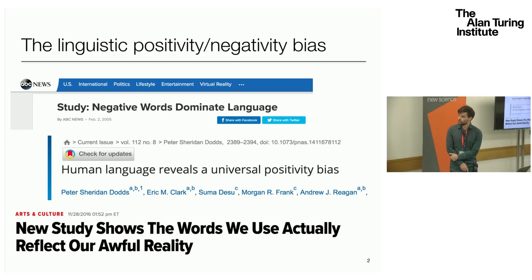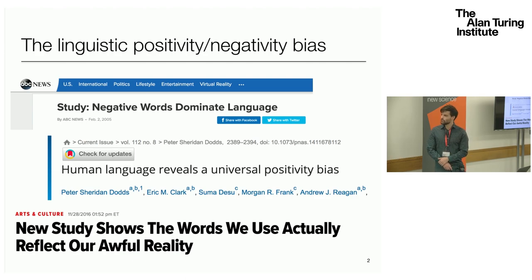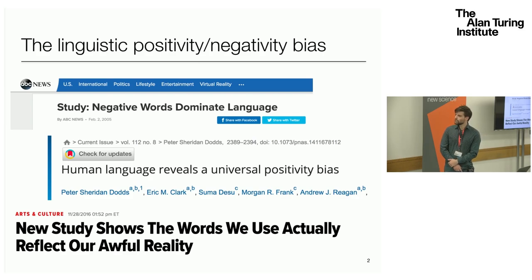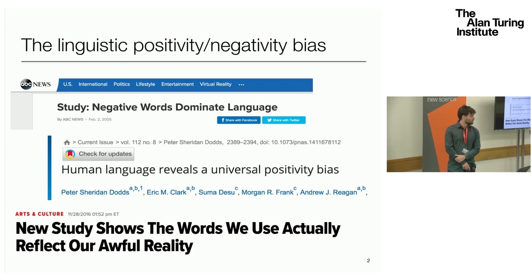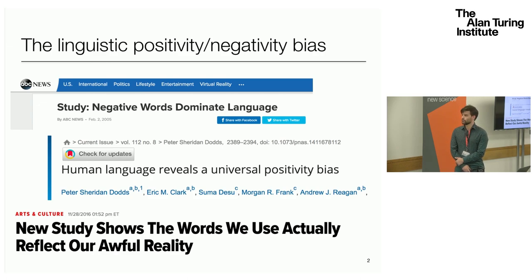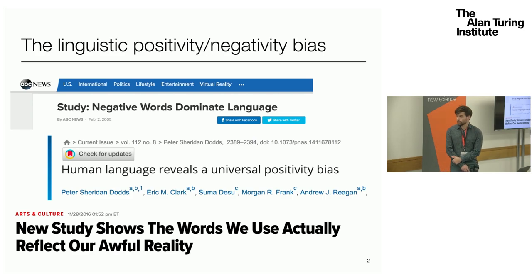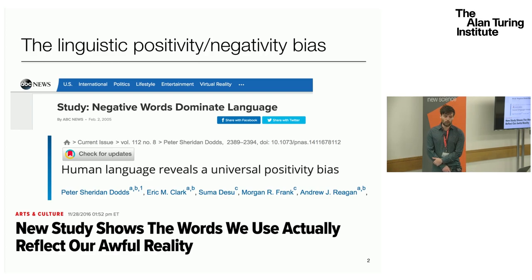This shows a few images of coverage in both the media and academia of this idea. At the top we have an ABC news article showing that negative words dominate language. There is a 2015 paper by Peter Dodds' group in PNAS which talks about the idea that human language reveals a universal positivity bias. And then more recently, a 2016 news article saying a new study shows the words we use actually reflect our own awful reality.